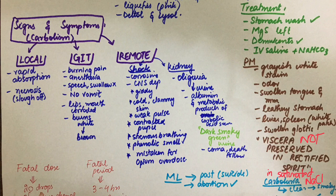The medico-legal aspects of carbolic acid poisoning include its use as an antiseptic, disinfectant, and surface anesthetic. Some of these were used in the past to commit suicide, but not now, as they have been replaced by more advanced and less painful materials. It is also sometimes used to procure abortion.